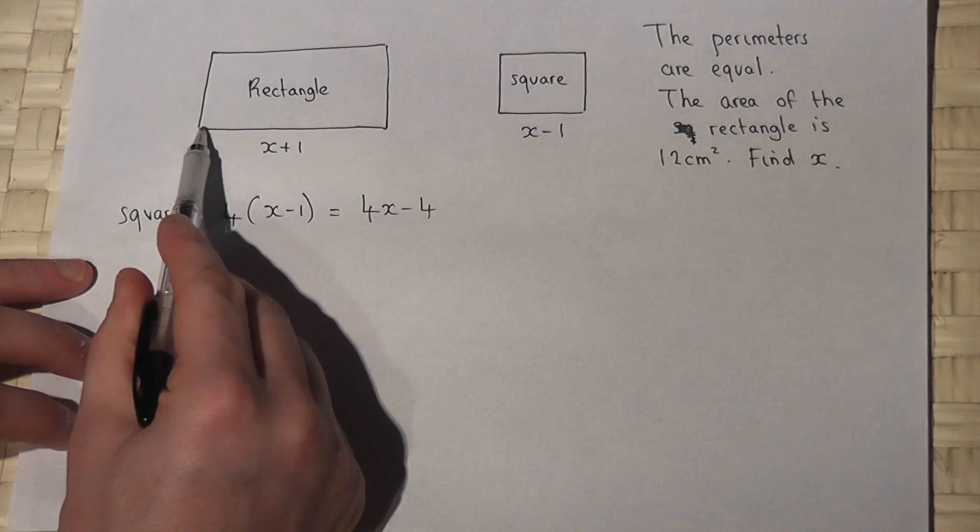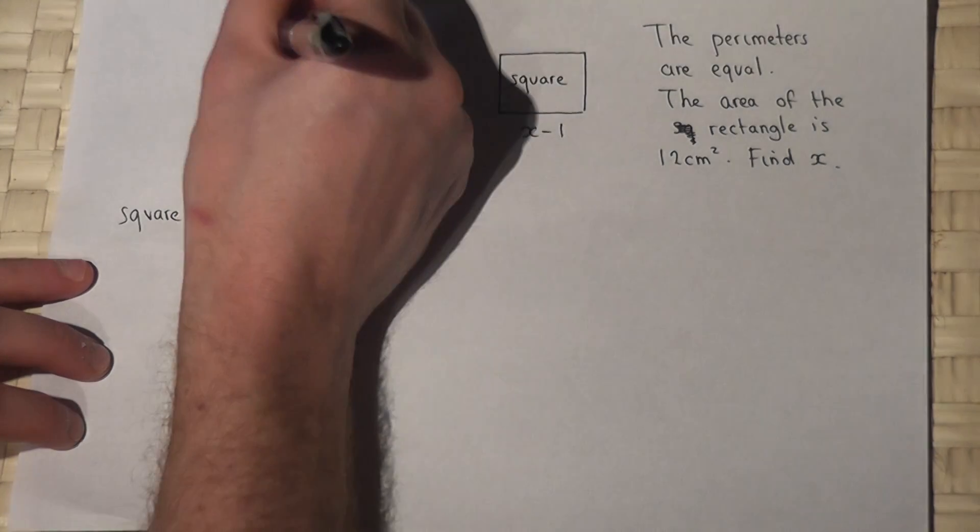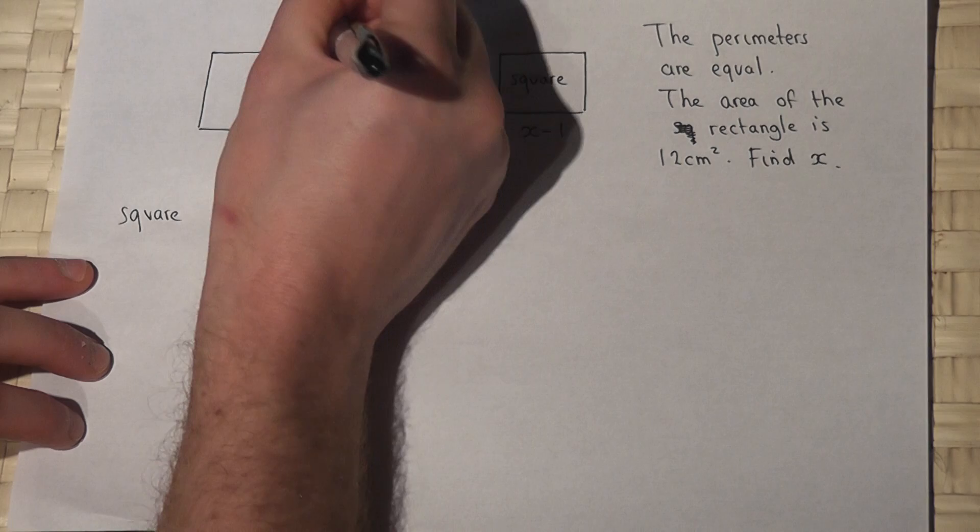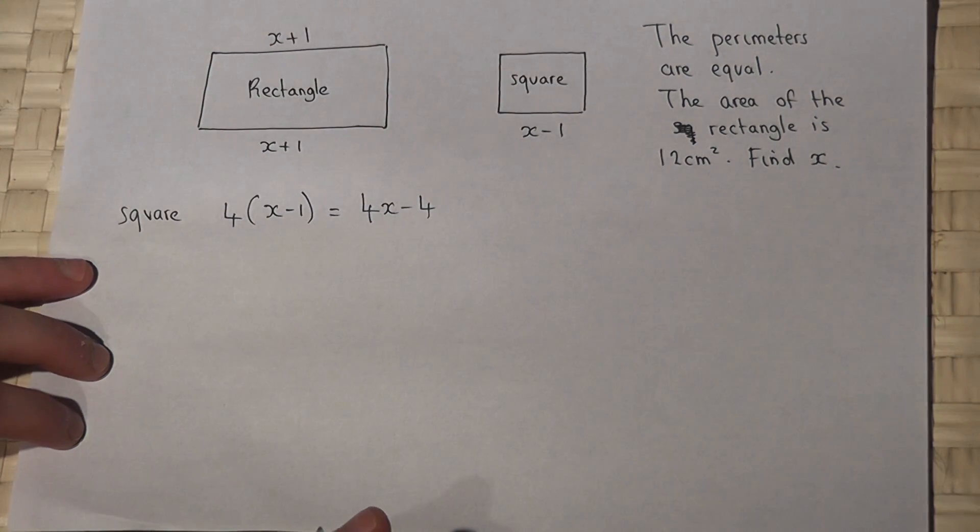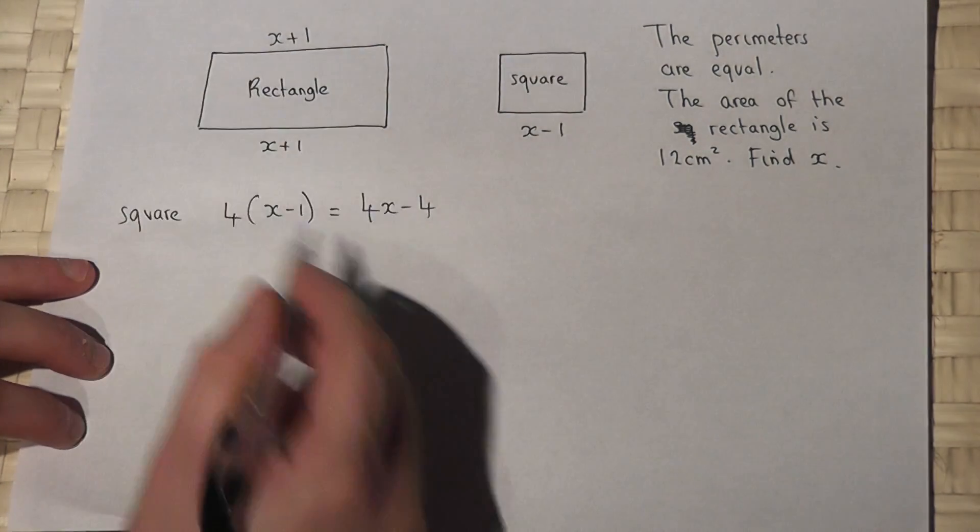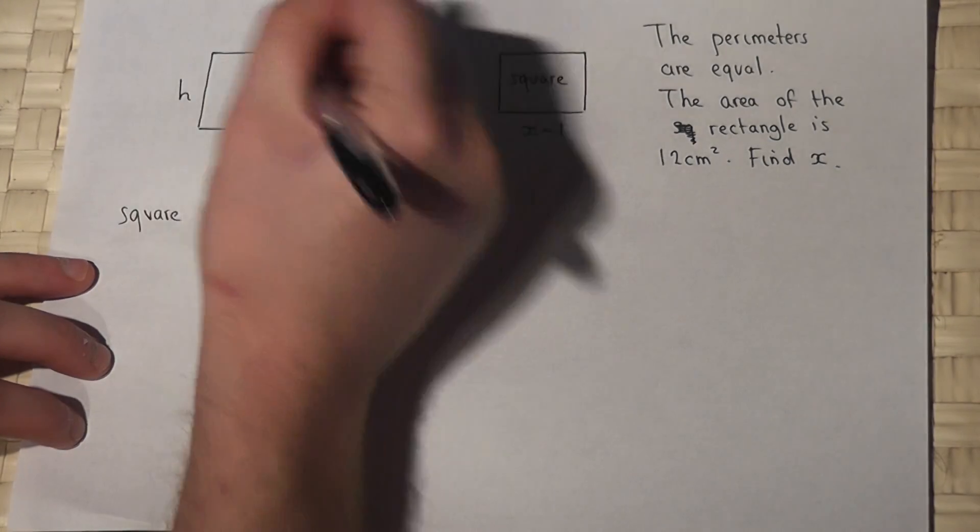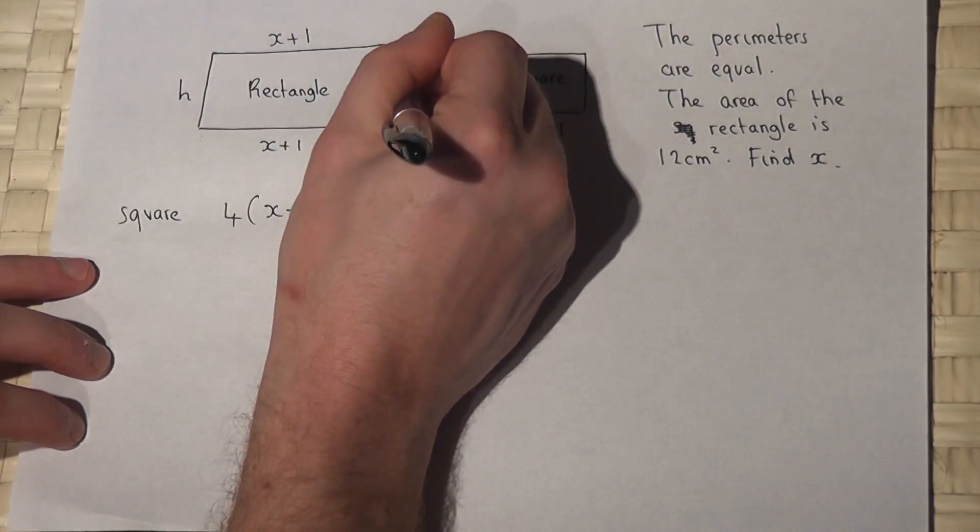This rectangle has a length of x plus 1 here, so this length must also be x plus 1. I will call the height of this rectangle h, so this is h and this is h.